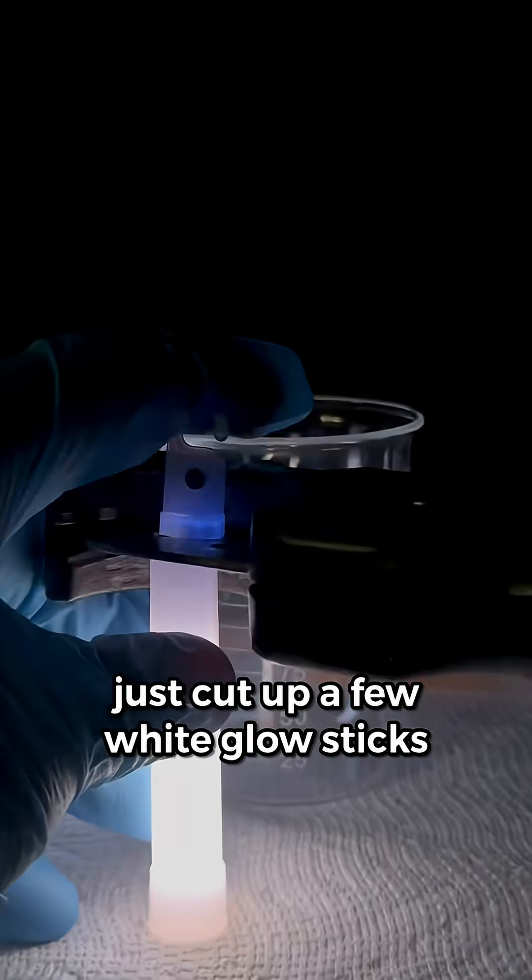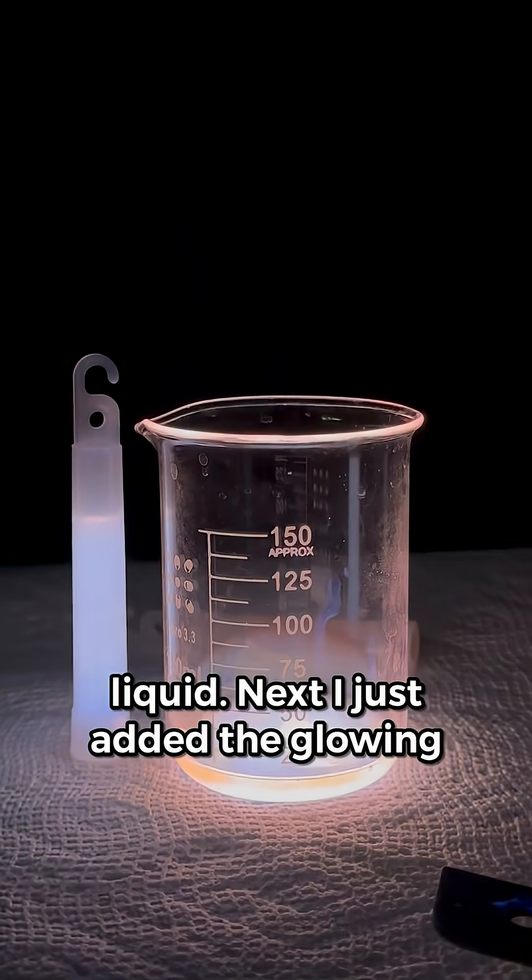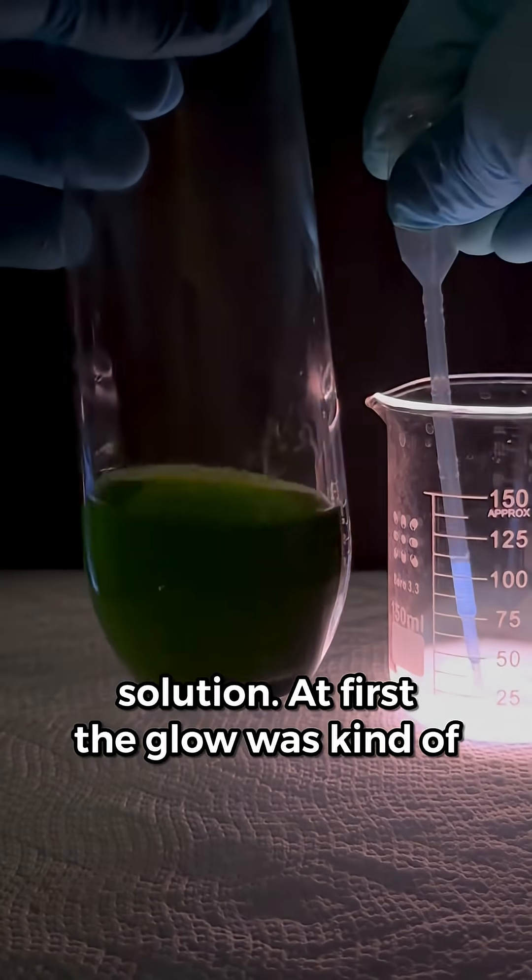To get the glowing fluid, I just cut open a few white glow sticks with a PVC cutter and collected the liquid. Next, I just added the glowing liquid to the green chlorophyll solution.